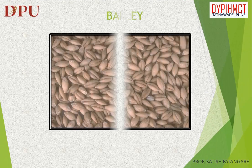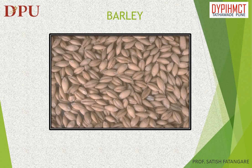In this slide we will discuss about barley. Barley, a member of the grass family, is a major cereal grain grown in temperate climates globally. It was one of the first cultivated grains, particularly in Eurasia as early as 10,000 years ago.